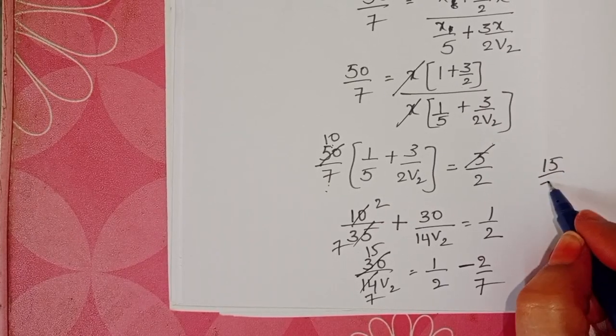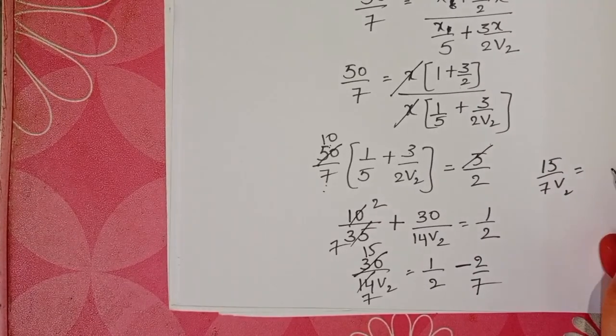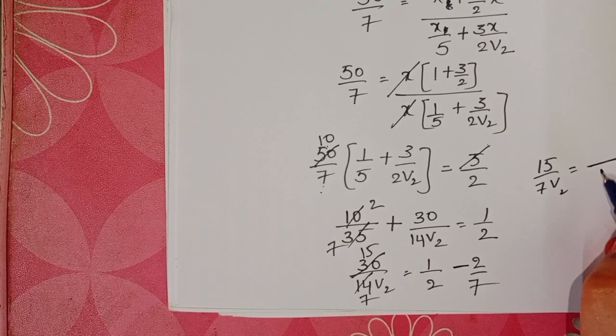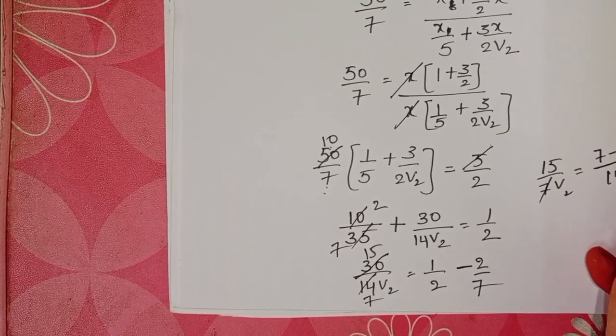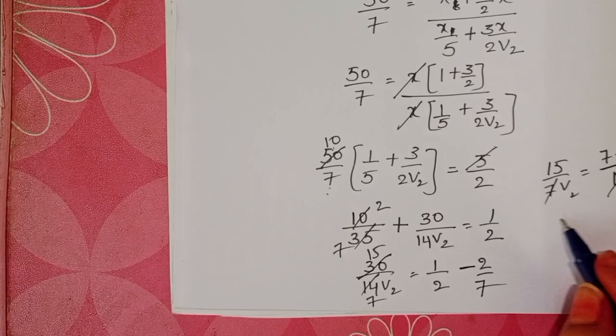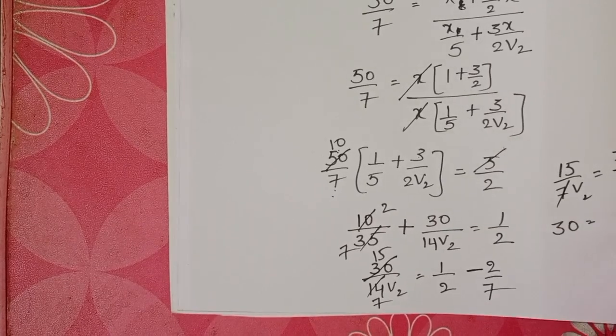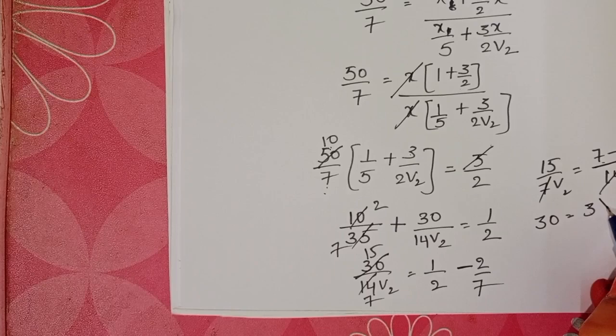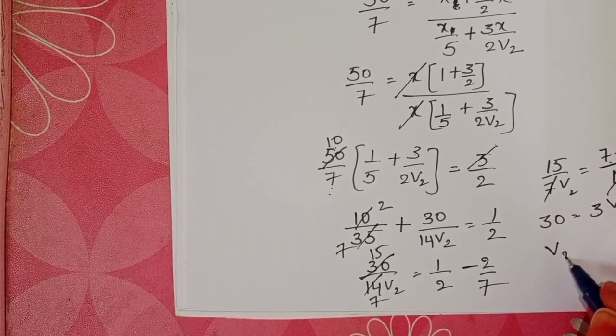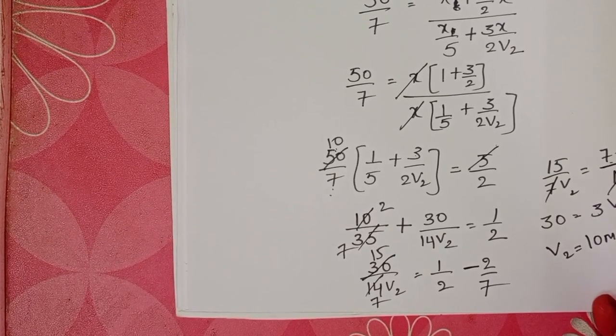Now 15 by 7v2 equals, LCM is 14. 7 minus 4, 7 into 1 is 7, 7 into 2 is 14. Cross multiply, it becomes 30 equals 7 minus 4 is 3, so 3v2. Therefore v2 equals 10 meter per second.